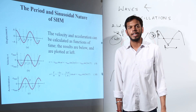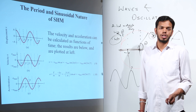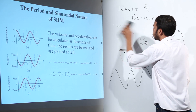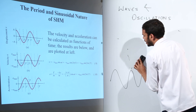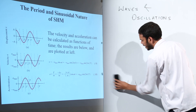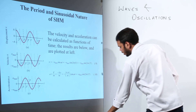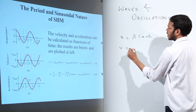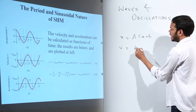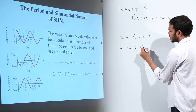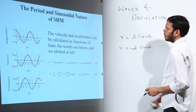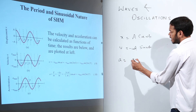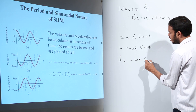Now velocity and acceleration can be calculated as functions of time and displacement. The equation is x = a cos(ωt). If I differentiate it, I get velocity: the derivative of cosine gives minus sine, so v = −ωa sin(ωt). This is the value of velocity.